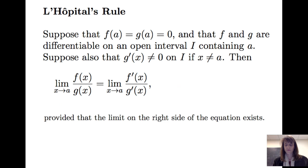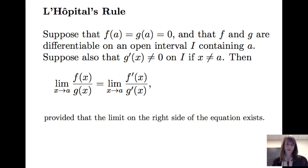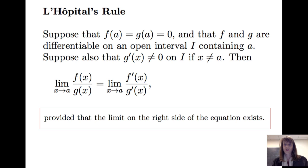So what is L'Hôpital's rule? Well, the statement says that suppose we have functions f and g, where f and g are differentiable on an open interval containing a, and f(a) and g(a) are both 0. Suppose we also know that g'(x) is not 0 on the interval, as long as x is not equal to a. Then L'Hôpital's rule says the limit of f(x) over g(x) as x approaches a is the same as the limit of f'(x) over g'(x) as x approaches a.